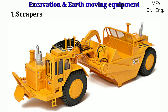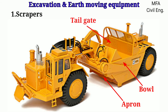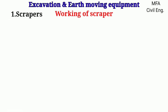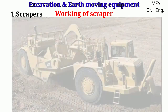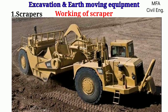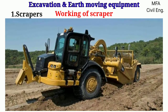The basic parts of the scraper are the bowl, apron, and the tailgate or ejectors. The loading operation of the scraper is done by lowering the front end of the bowl until the cutting edge enters the ground. Simultaneously, the front apron is raised to provide an opening slot through which the earth flows into the bowl. As the scraper moves forward, the earth is forced into the bowl.